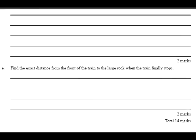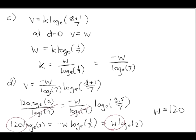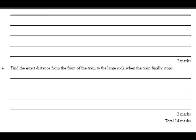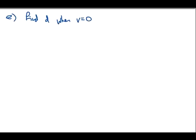Last part of the question. Find the exact distance from the front of the train to the large rock when the train finally stops. Okay. So, putting things together. Let's do it. E. Okay. So, basically, you want to know what happens when the train stops, right? So, basically, you want to find D when V equals 0, don't you? Find D when V equals 0.